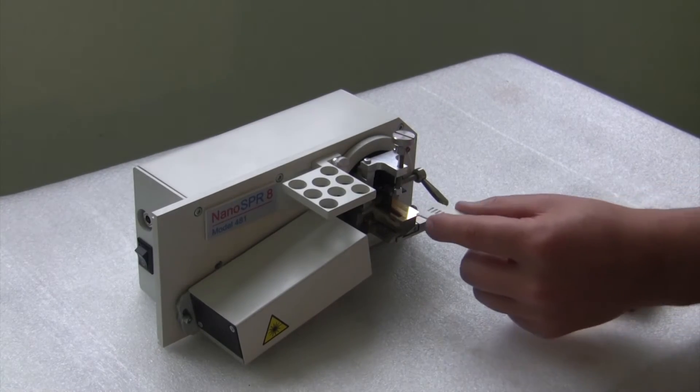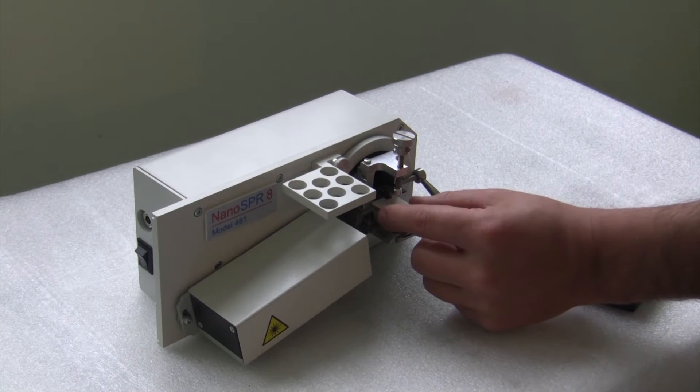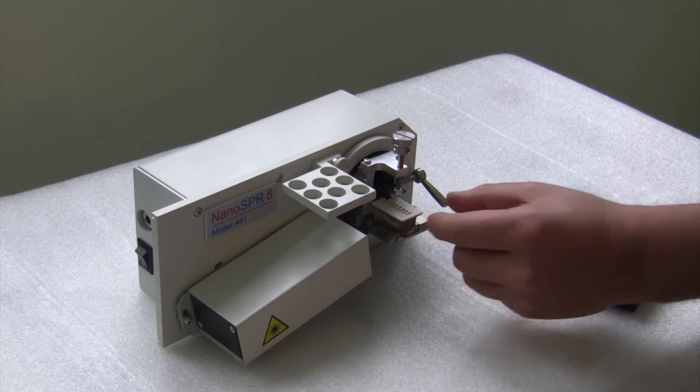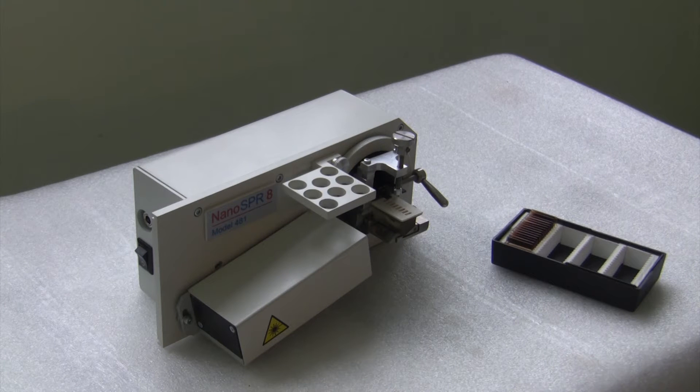Next, we will apply the gasket. Gaskets can vary in thickness. This allows to adjust the volume of the measurement chamber.